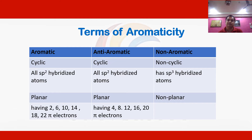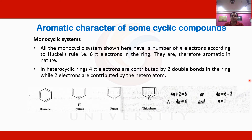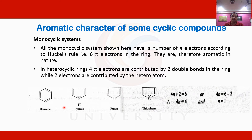Now let us discuss the aromatic character of some cyclic compounds. Monocyclic systems are those in which atoms combine with each other to form a closed cyclic ring, as in benzene. Heterocyclic compounds like pyrrole, furan, and thiophene are also monocyclic systems because in each case four corners represent carbon atoms while the fifth member — nitrogen, oxygen, or sulfur — joins with the others to form a closed cyclic ring.